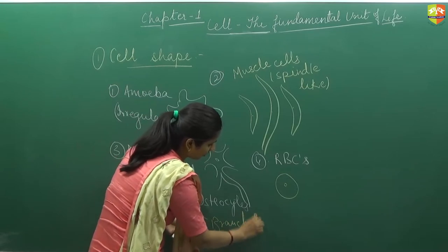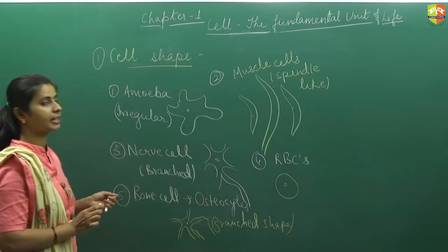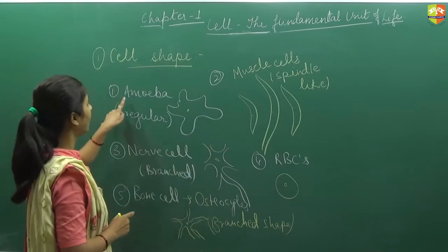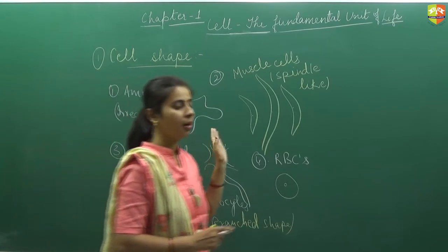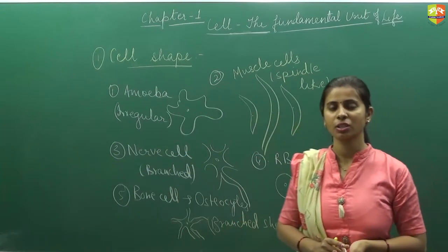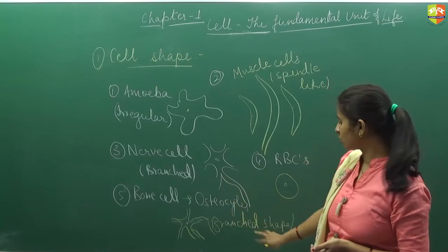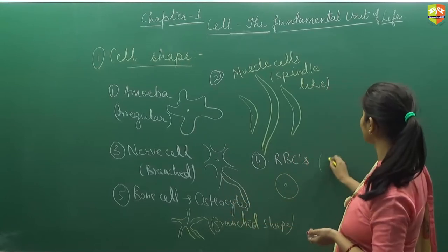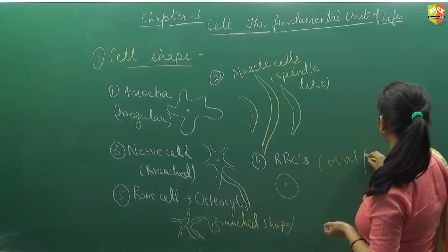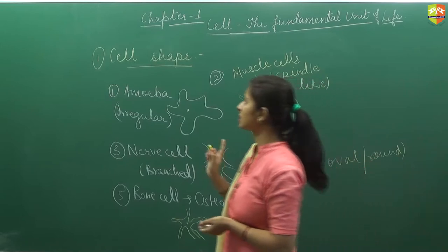This we talked about the shape of the cells. I have considered five examples that is given in your NCERT. Amoeba is of irregular shape. Muscle cell is of spindle shape. Nerve cell is branched shape. Then bone cells that is known as osteocyte is also branched. And the RBC is in oval shape. This we talked about cell shape.